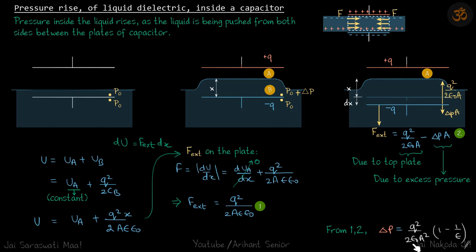We'll directly get our excess pressure as q squared by 2 epsilon naught a squared times 1 minus 1 by epsilon. You notice this is independent of x, so it doesn't matter what was the initial level of the water inside the dielectric. Everywhere in between the plates, the pressure is going to increase by the same amount, which is this.